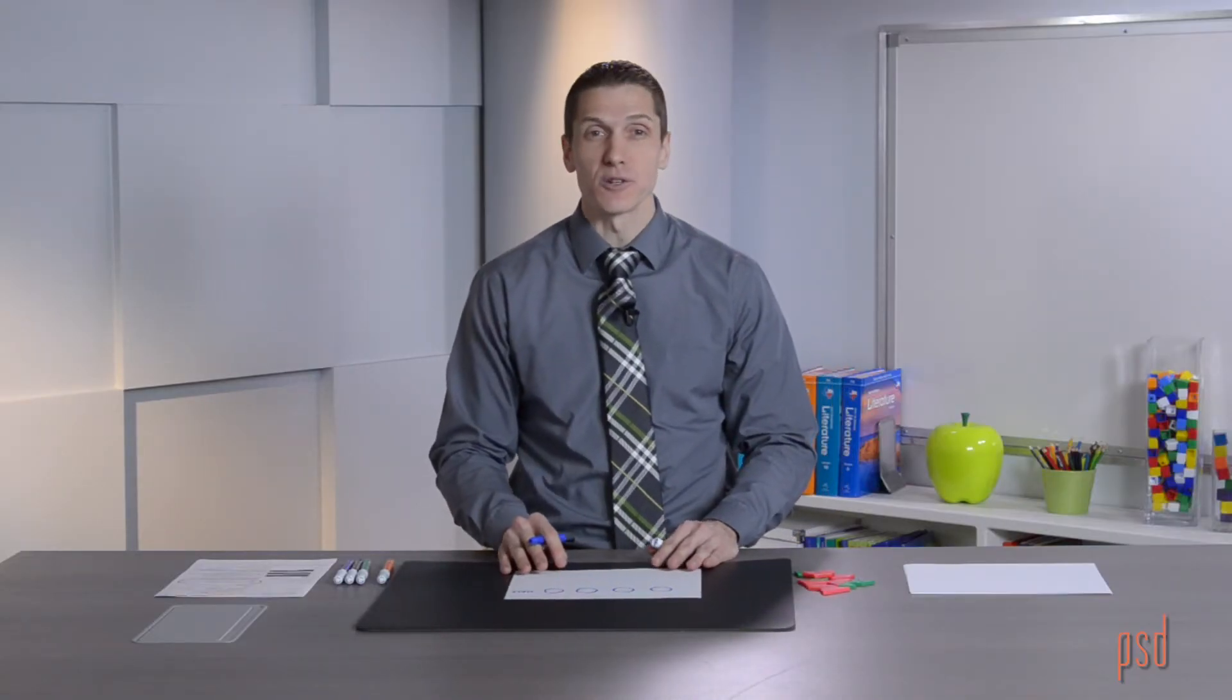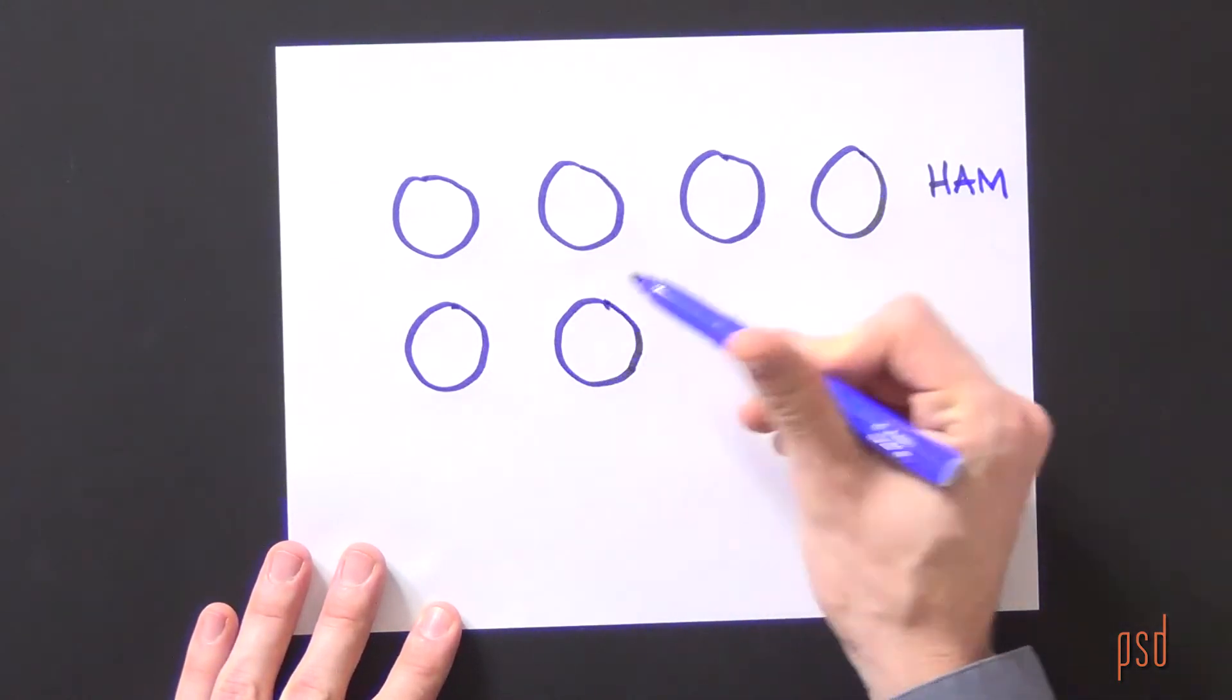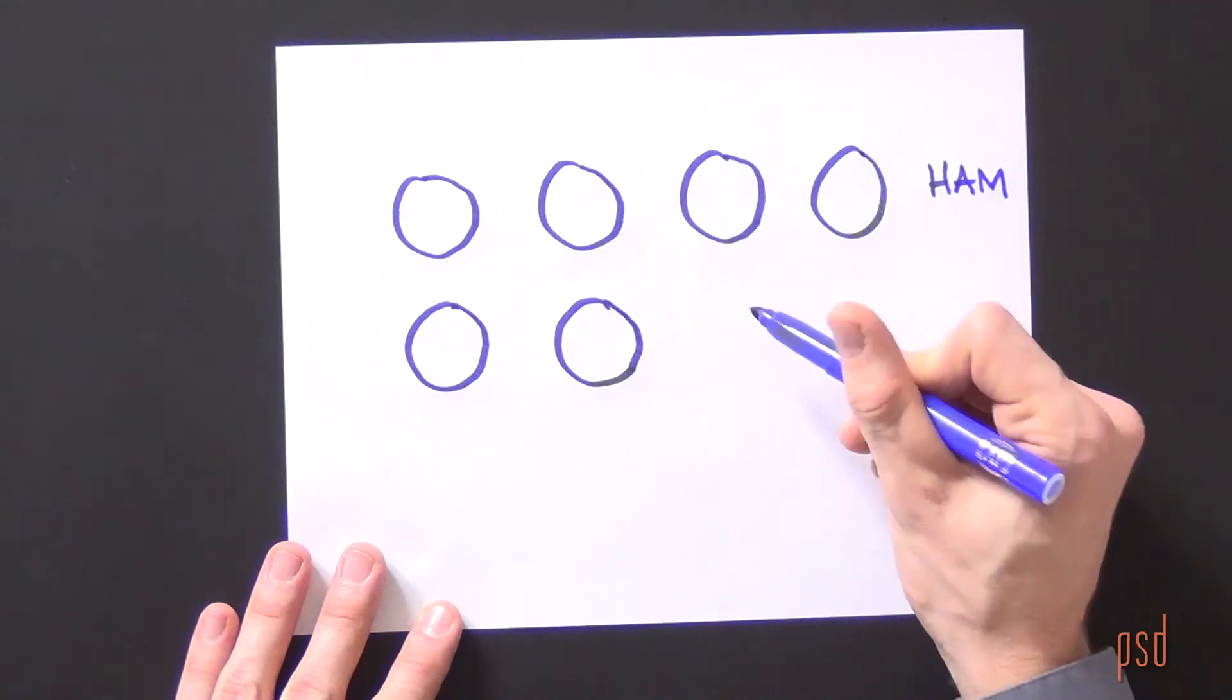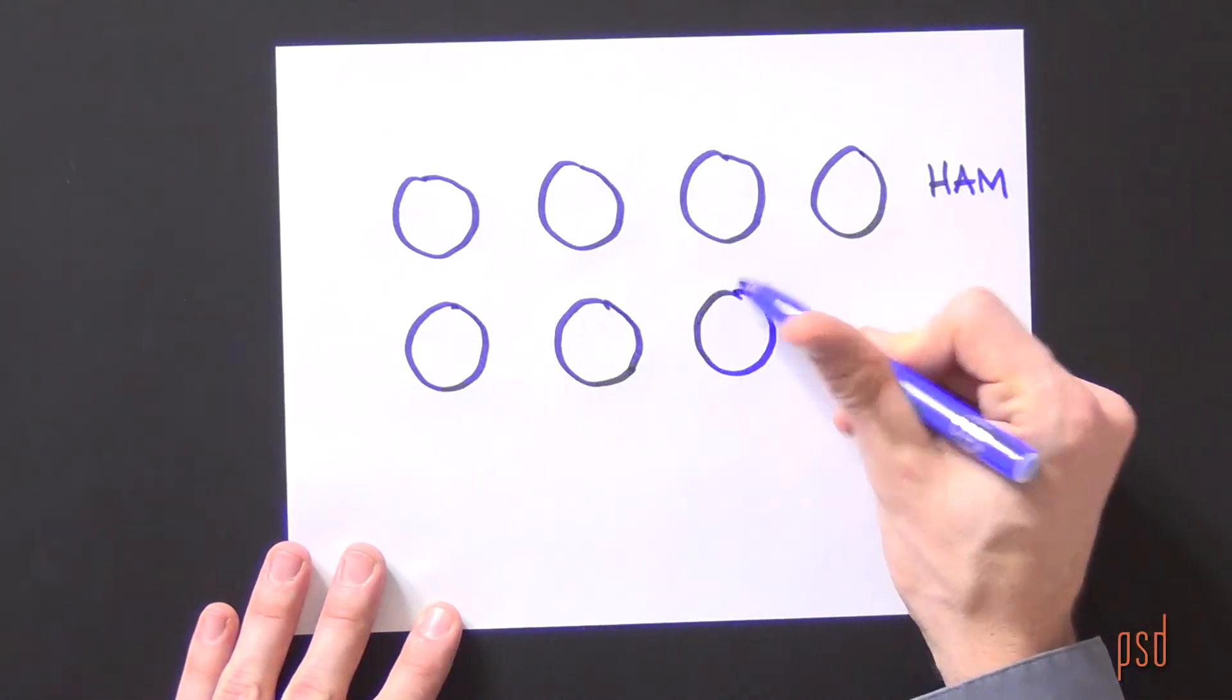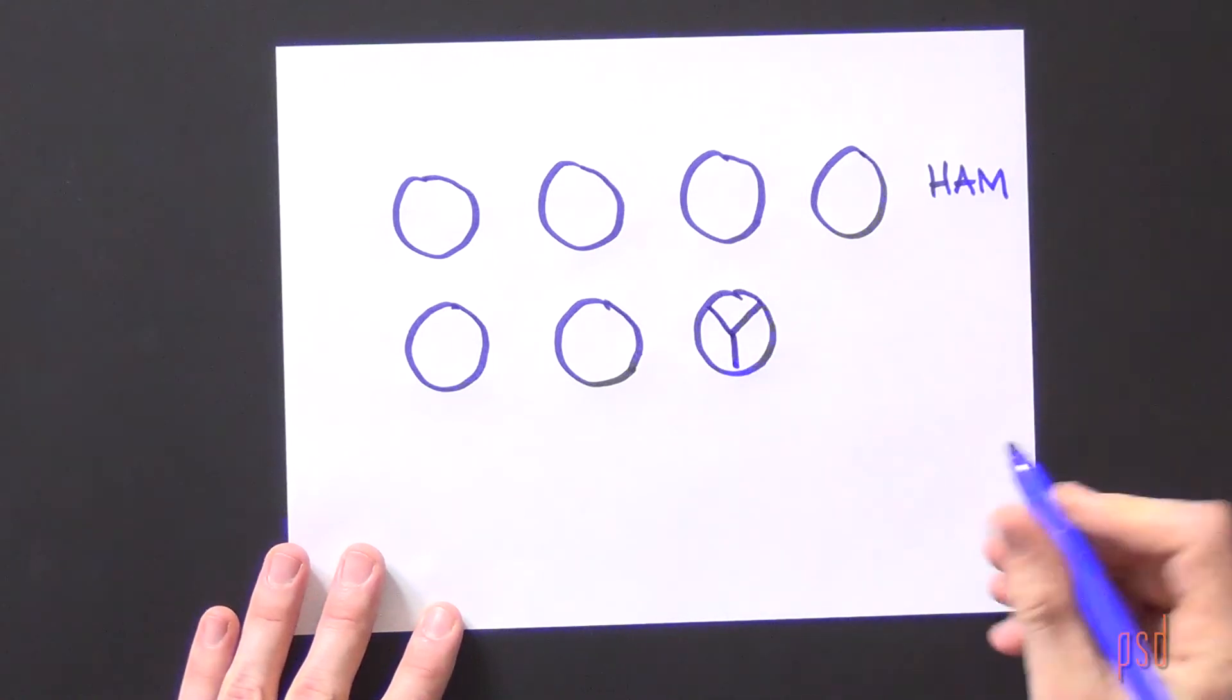I know that she also purchased 2 and 2 thirds pounds of turkey. So I can draw 2 circles to represent the 2 pounds and then another circle partitioned into thirds to represent the 2 thirds.